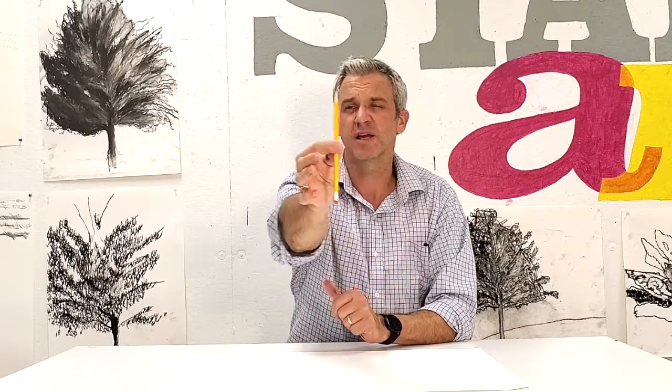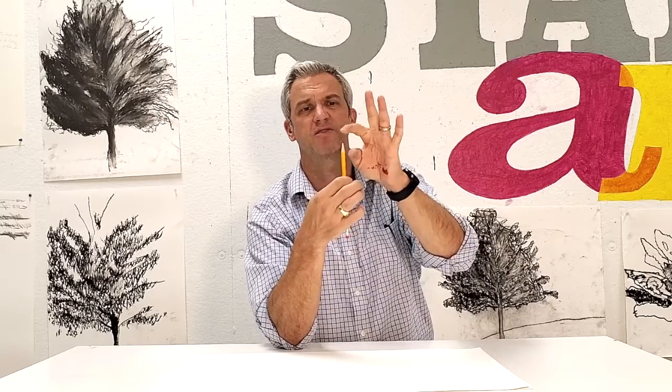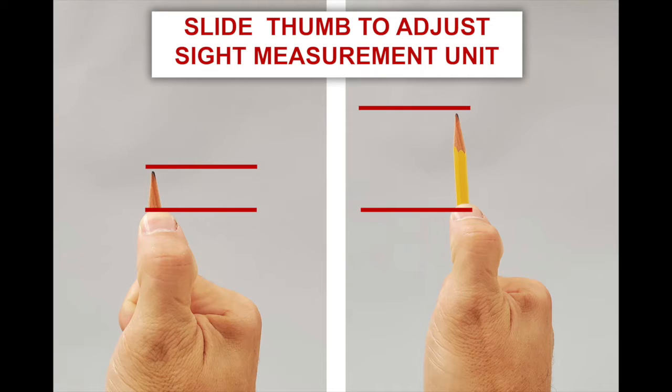The other way that a pencil can help you out is by measuring. It's going to be really important as you sight down your arm to keep your arm straight the whole time — if you move your arm in or out, it's going to affect the measurements that you make. The way we make a measurement is we're going to be choking up or down on the pencil, using the point of the pencil to mark one area of what we're measuring, and then using our thumb to find the area we want to measure against. That measurement is then held and moved around the sheet.